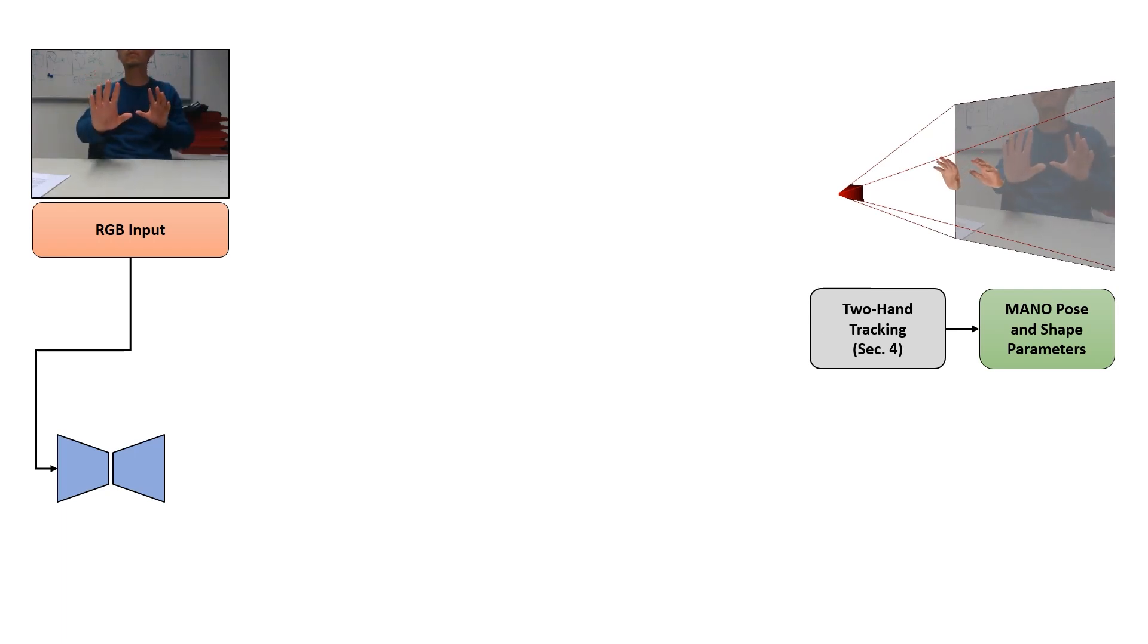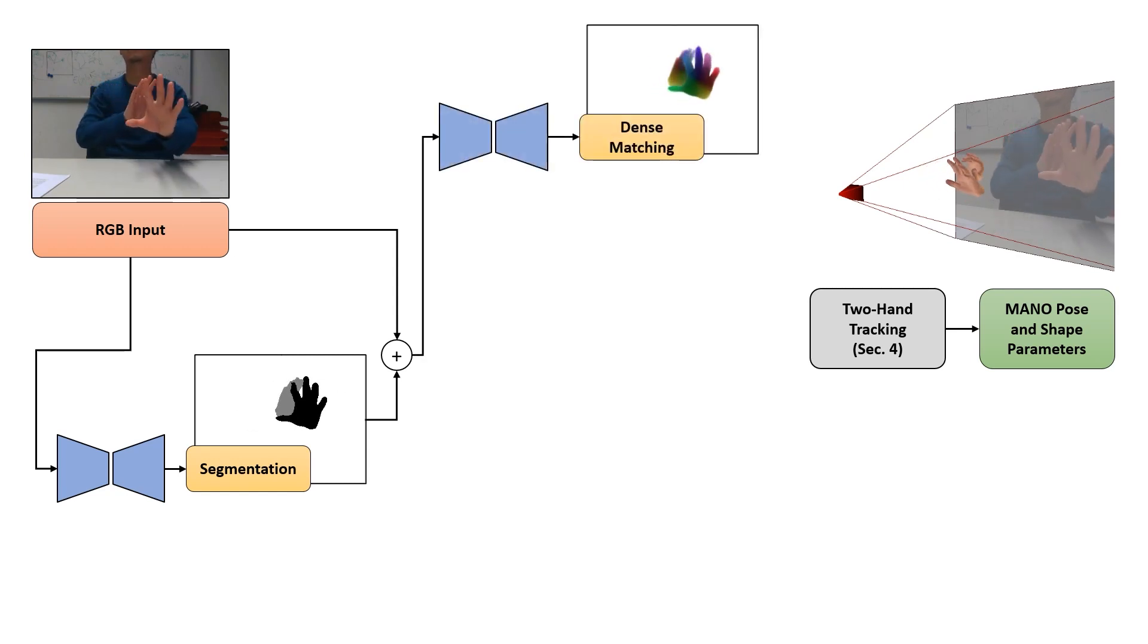For our network architecture, we first predict per-pixel classification for left and right hand. This segmentation mask is used together with the RGB input image to further regress the following outputs. A dense matching image that establishes correspondences to the parametric hand model, independent of appearance and lighting variation.